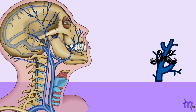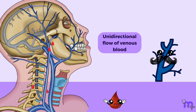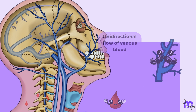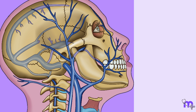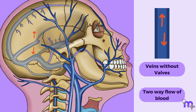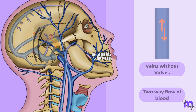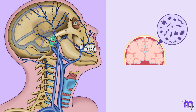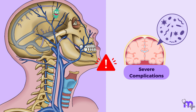Valves ensure that all venous blood flows only in one direction, i.e. towards the heart. However, valveless veins enable a bidirectional blood flow, influenced by local pressure changes. Consequently, infections in these regions can spread and lead to serious complications.